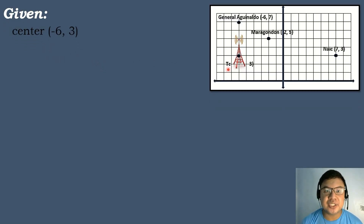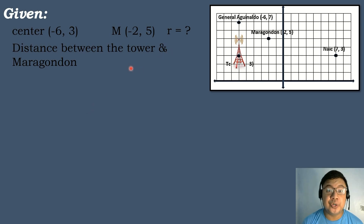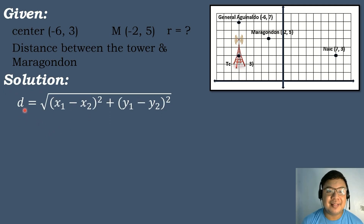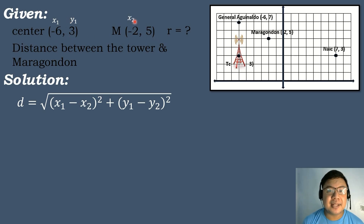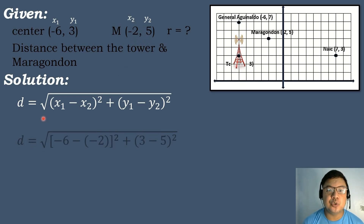Let's list the given: the center, which is the cellular tower, is at (negative 6, 3), and the coordinates of Maragondon are (negative 2, 5). To find the radius, or the distance between the tower and Maragondon, we use the distance formula: d equals the square root of (x₁ minus x₂) squared plus (y₁ minus y₂) squared. We let x₁ equals negative 6, y₁ equals positive 3, x₂ equals negative 2, and y₂ equals positive 5.